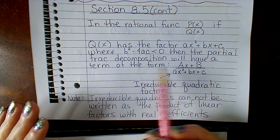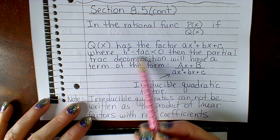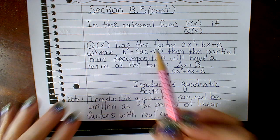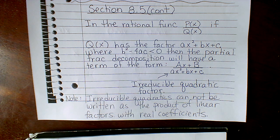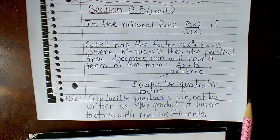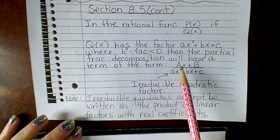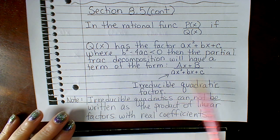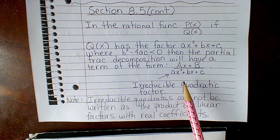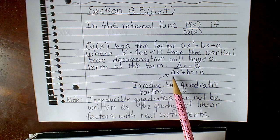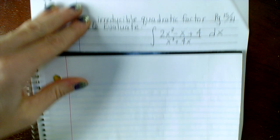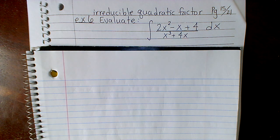Here's a more precise definition: where the discriminant b squared minus 4ac is less than 0, the partial fraction decomposition is going to have a term that looks like this. This is just saying that when you take the square root of b squared minus 4ac, you're going to get an imaginary number. So we get this irreducible quadratic factor right here.